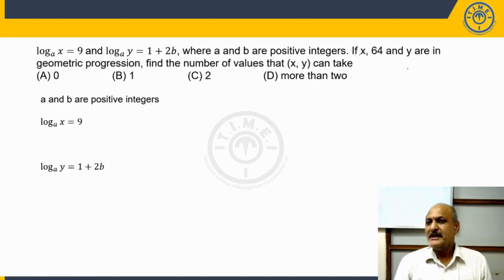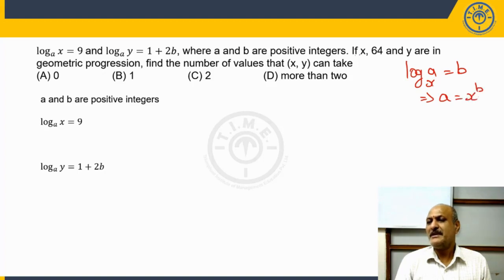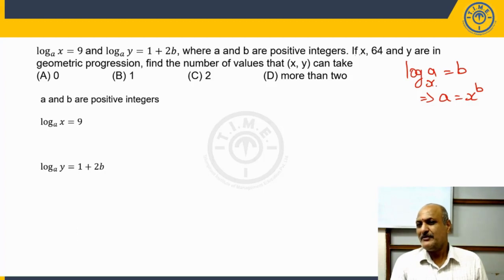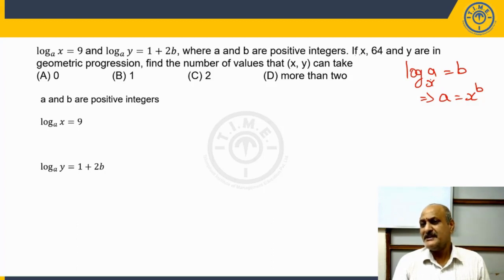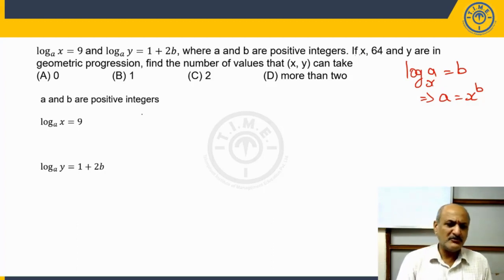Now, what do we know in logarithms? Suppose it is given that log a to the base x is equal to b. In exponential form, we write it as a is equal to x raised to the power of b. So in both these expressions, the base x will remain the same — that's a key point to identify.